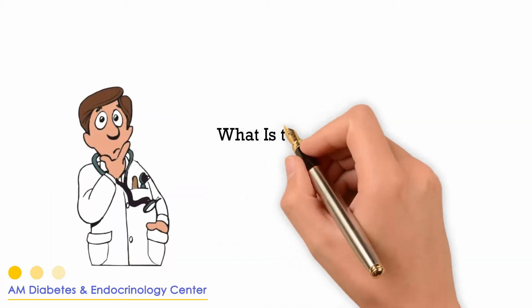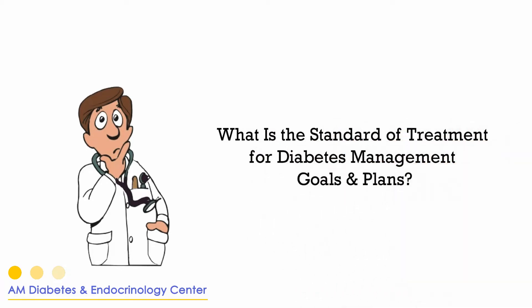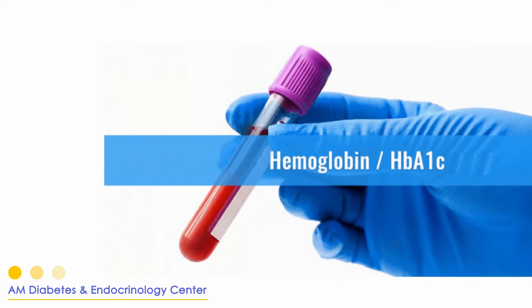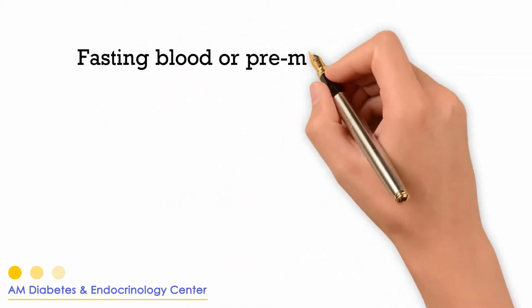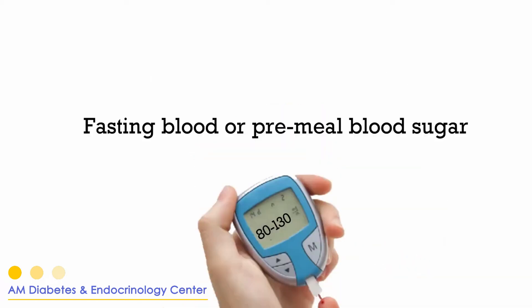What is the standard of treatment for diabetes management goals and plans? A1c less than 7%, fasting or pre-meal blood sugar of 80 to 130, and